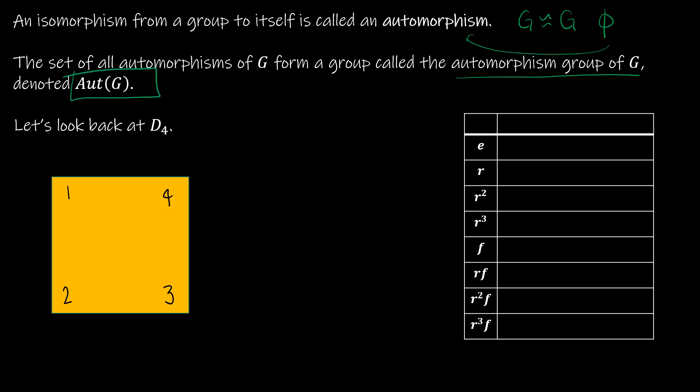Let's look back at D4. We're going to show that D4 is isomorphic to itself, which is what makes it an automorphism. We're going to collect all of the automorphisms of D4, which are all of the rotations and reflections we've already looked at. I'll rush through the actual permutations since we spent a lot of time on this in Chapter 1.